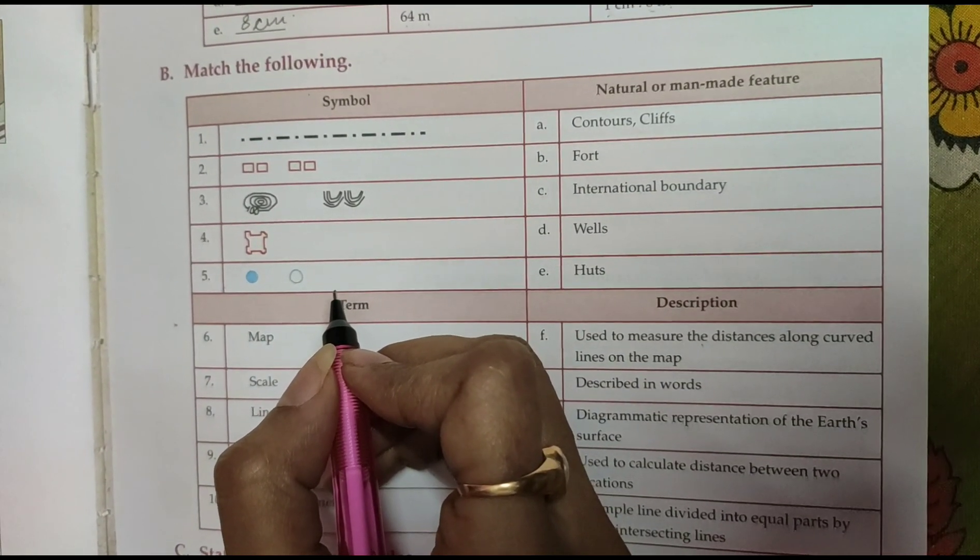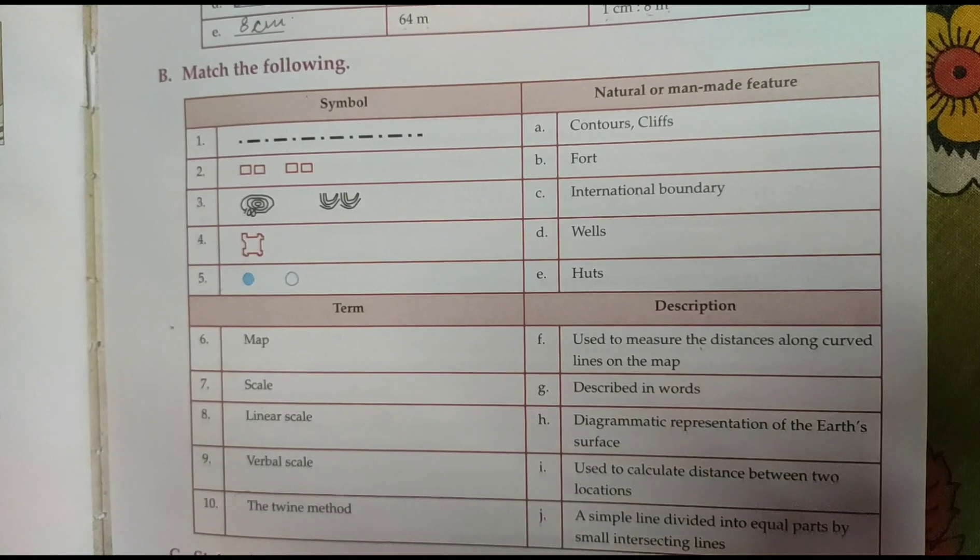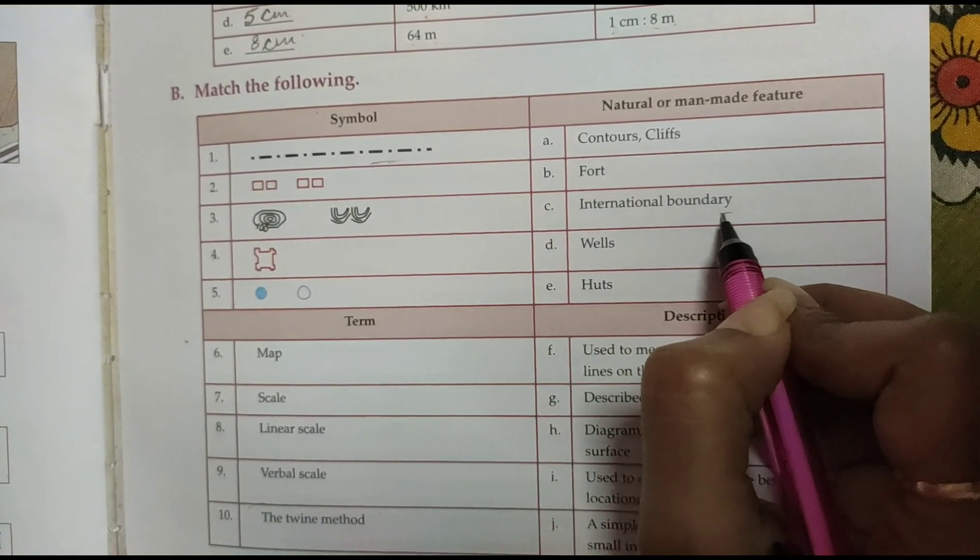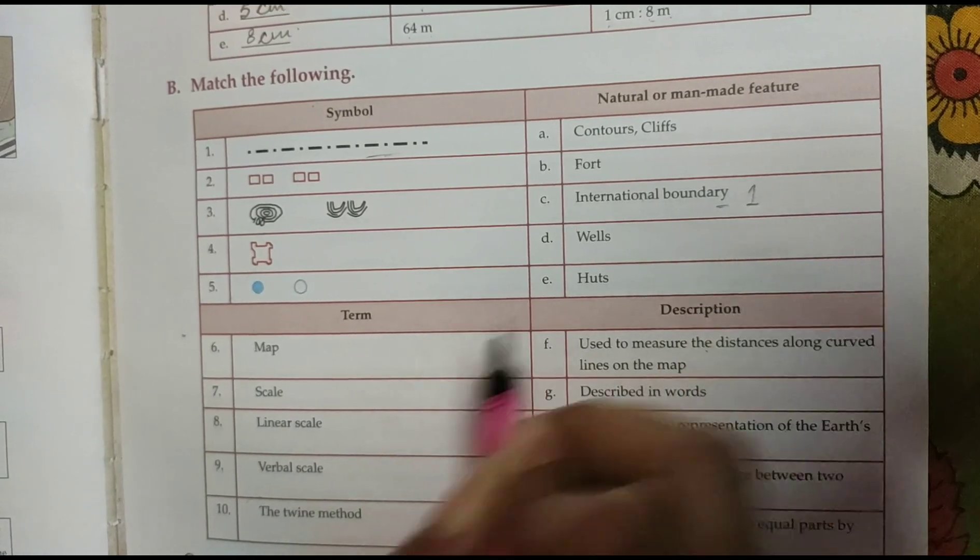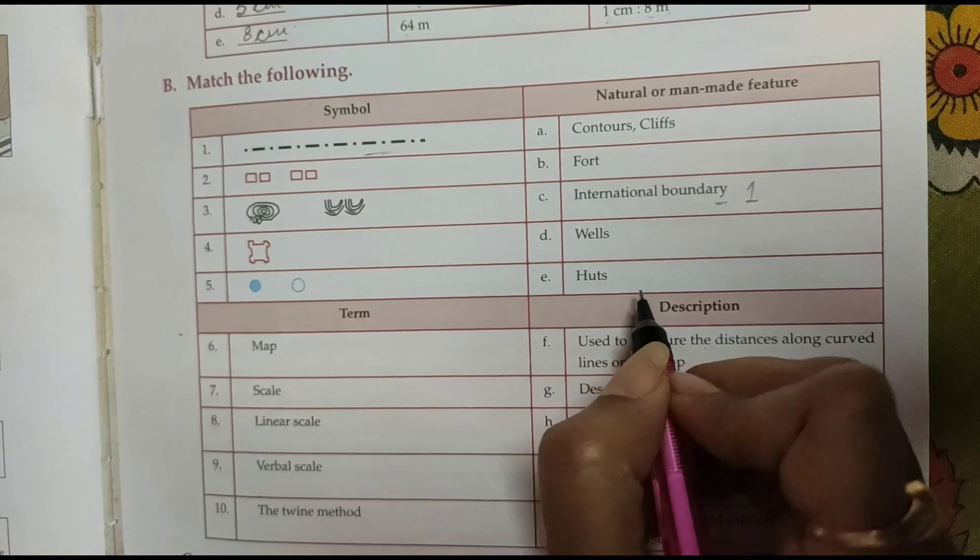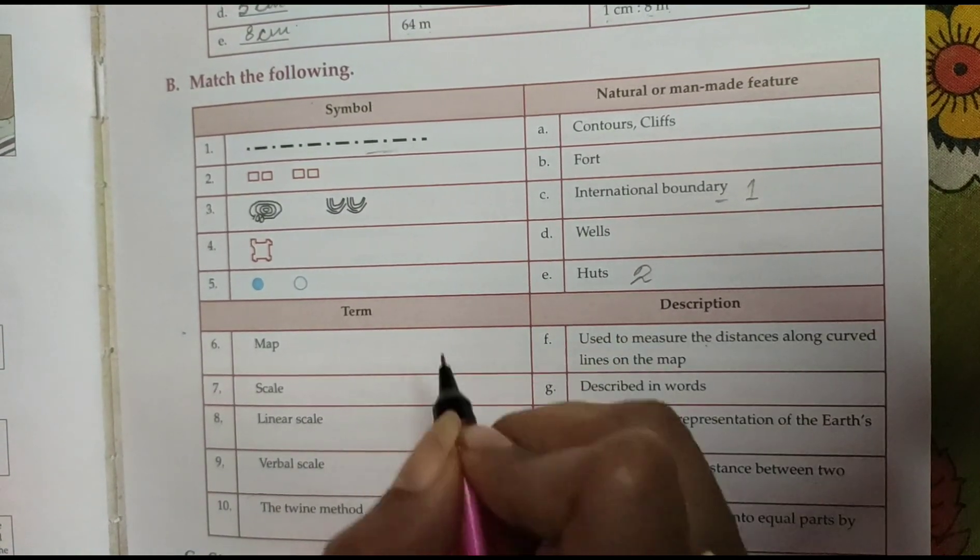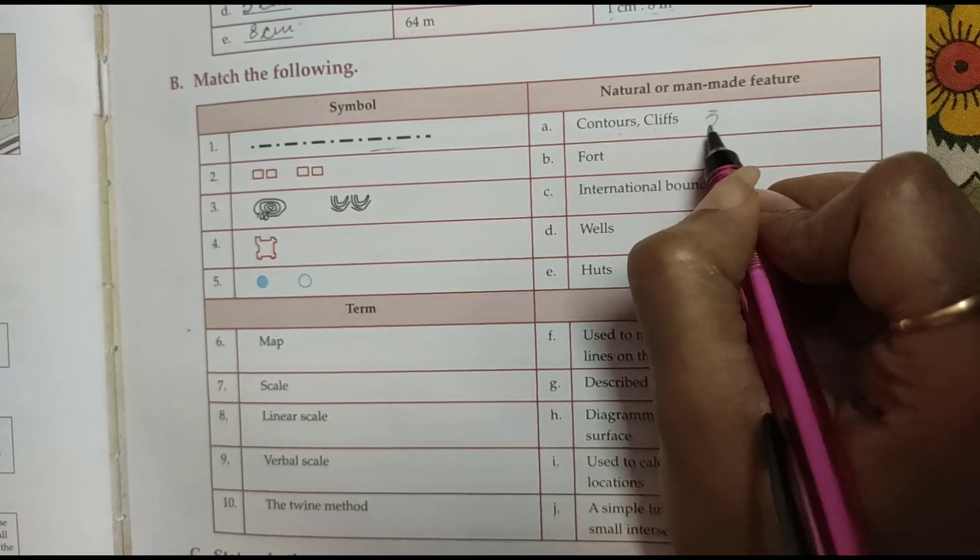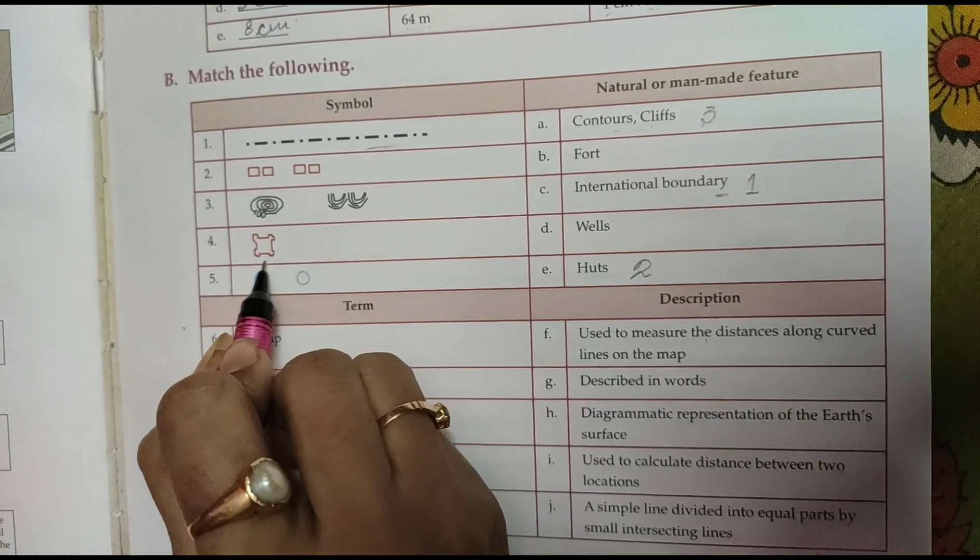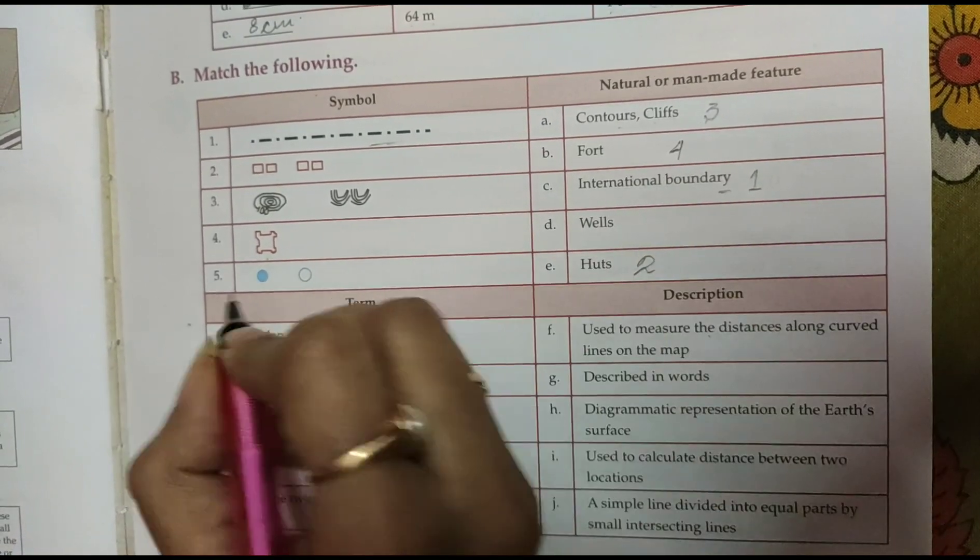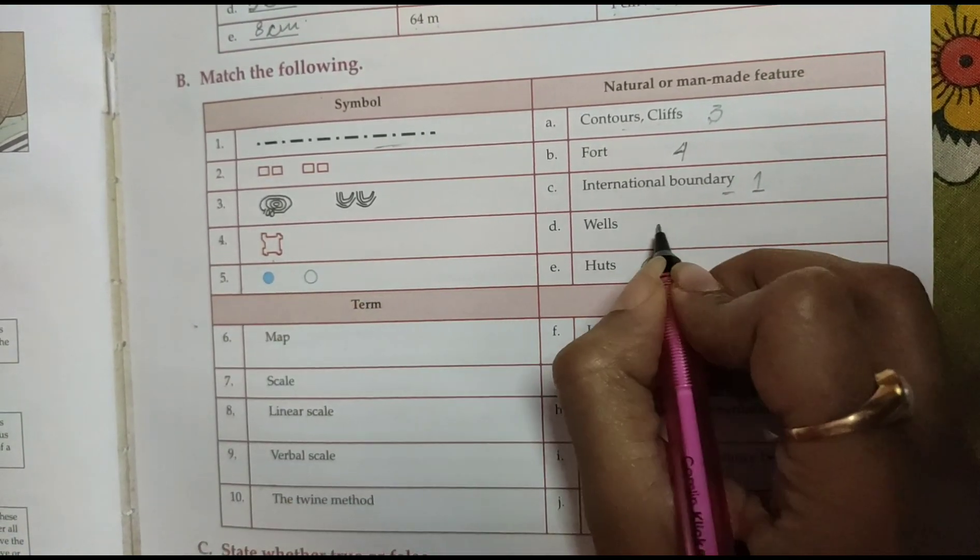Now B number, matching. This is the symbol of the international boundary, that means 1. These are the symbols of the huts, that means 2. These are the contours and cliffs, 3. This is the fourth, and this is the well, 5.